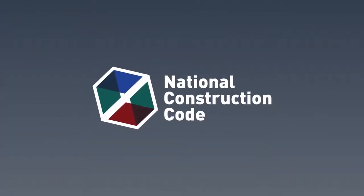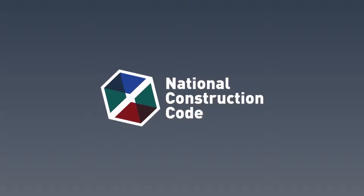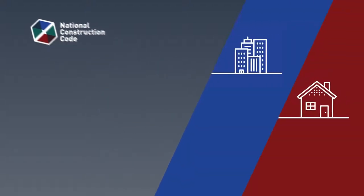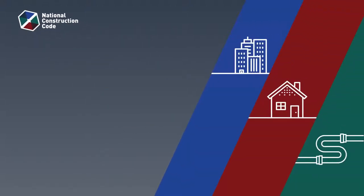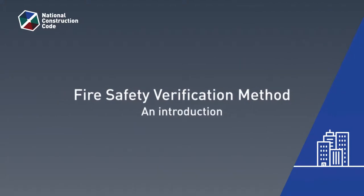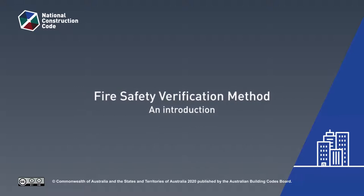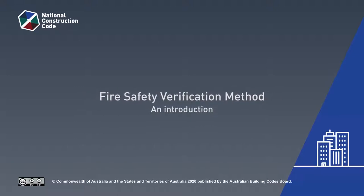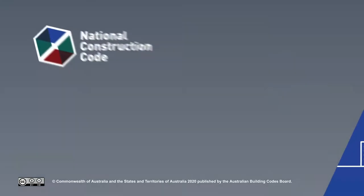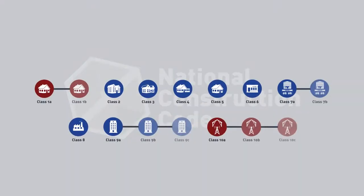The National Construction Code, or NCC, is a performance-based code. It requires minimum levels of fire safety for all buildings. One way to verify that the relevant fire safety performance requirements in NCC Volume 1 are met is to use the Fire Safety Verification Method, or FSVM. The verification method can be used for all building classifications covered by NCC Volume 1.